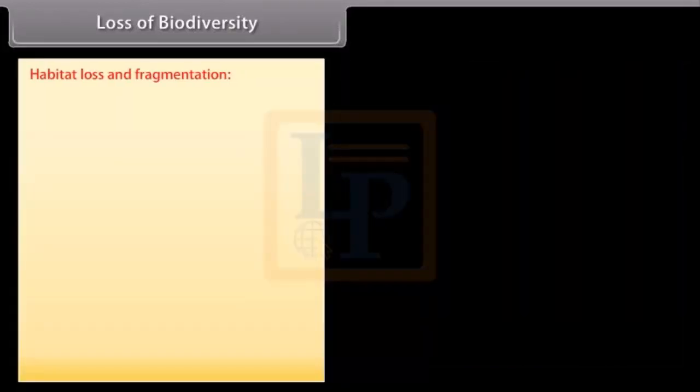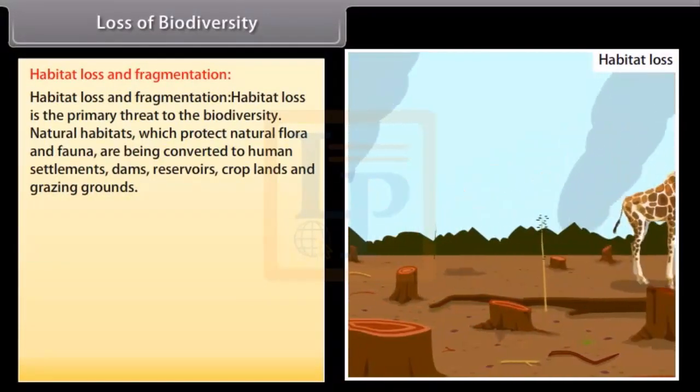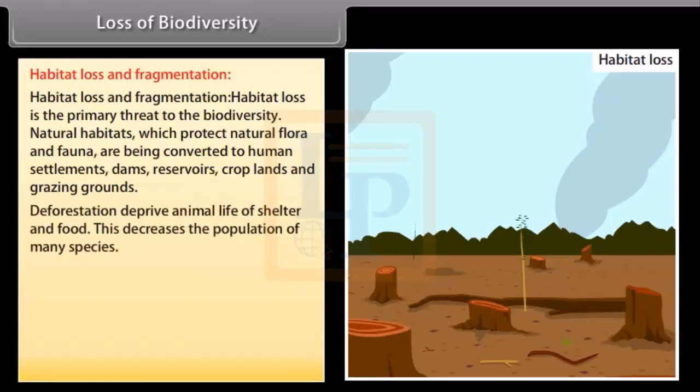Loss of Biodiversity. Habitat loss and fragmentation. Habitat loss is the primary threat to the biodiversity. Natural habitats, which protect natural flora and fauna, are being converted to human settlements, dams, reservoirs, croplands, and grazing grounds.